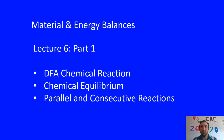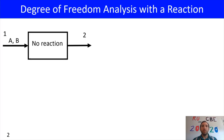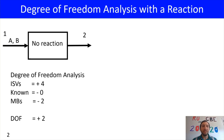For our material balances, we've done a lot of material balances on units that do not have a reaction. In this simple system, I have A and B entering a unit with no reactions. If we do a degree of freedom analysis, we have four independent system variables — A and B in stream 1, A and B in stream 2. With no knowns and two material balances, we have two degrees of freedom.